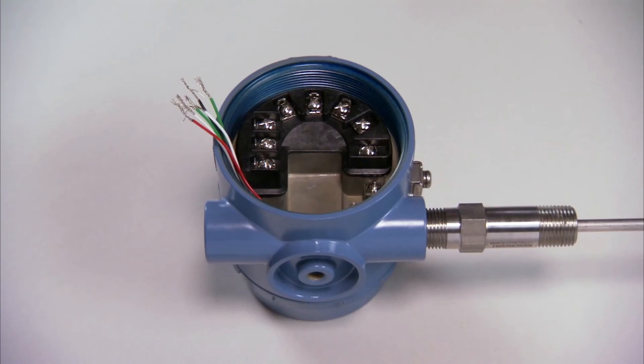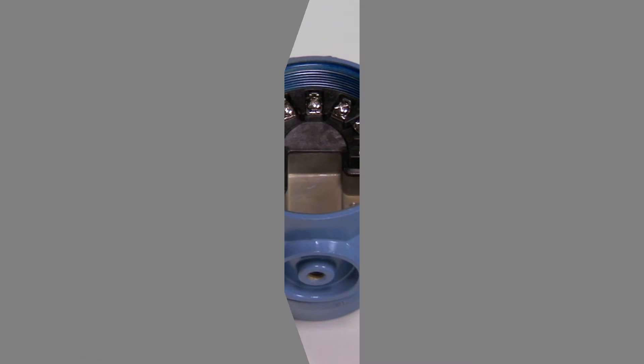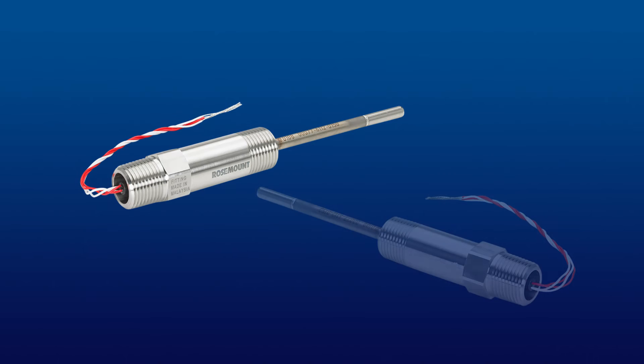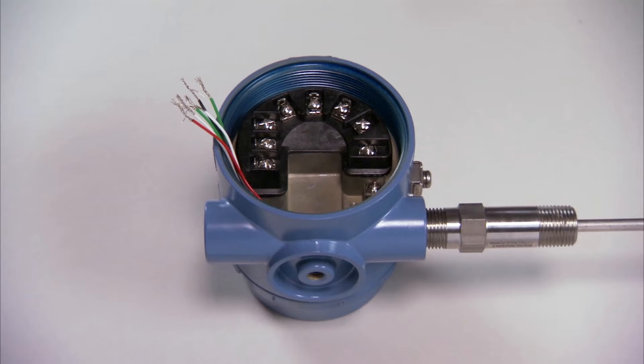The sensor wires and power connections must now be attached. Because the 3144P can accept two separate sensor signals, the transmitter can be wired using a dual-element sensor or two individual sensors. Remember, the wire colors will vary based on manufacturer and sensor type.